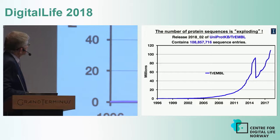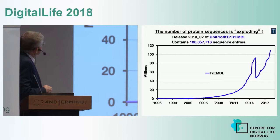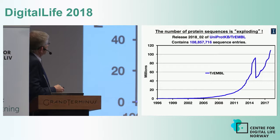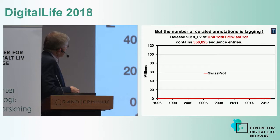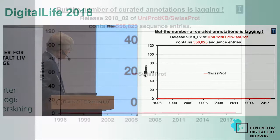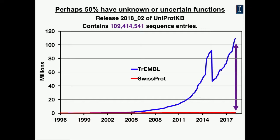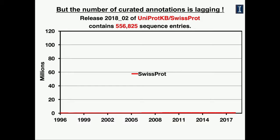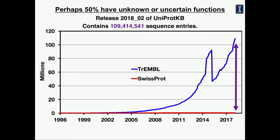We use the UniProt database, and this is a plot of the growth of the UniProt database as a function of time. As of a couple of weeks ago, there were approaching 110 million sequences in the TrEMBL database — the automatically annotated part of UniProt. In contrast, in SwissProt there were about 500,000 sequences that are manually annotated.